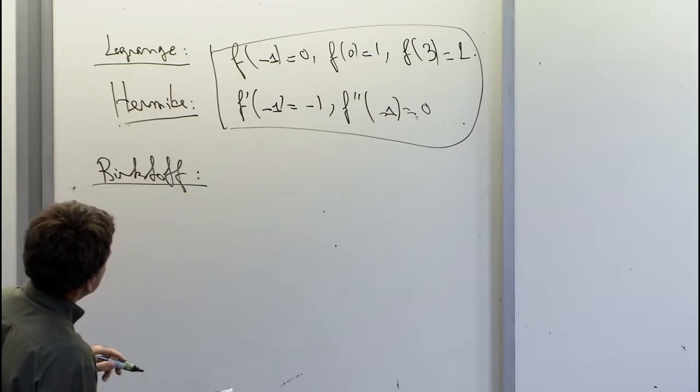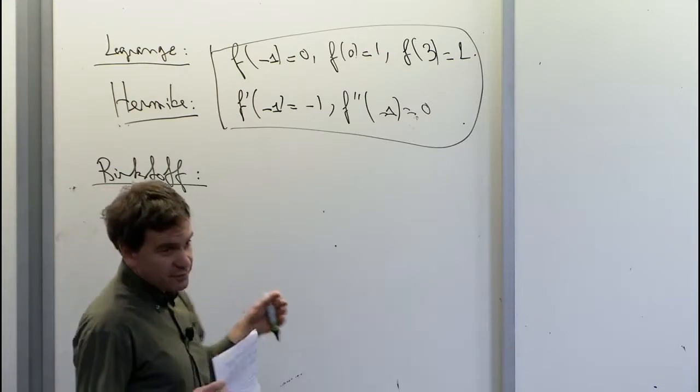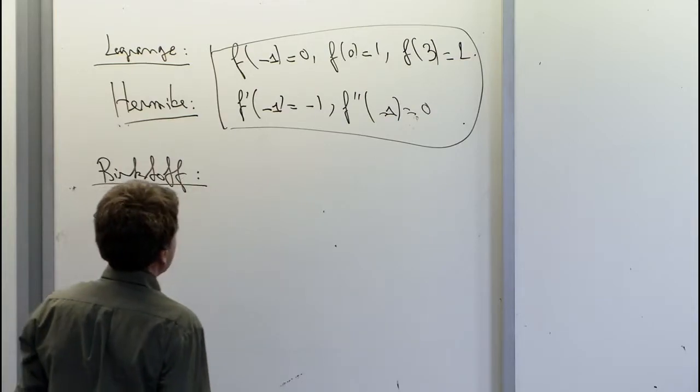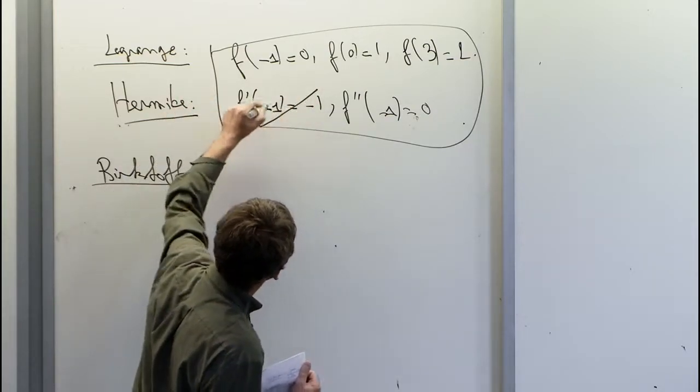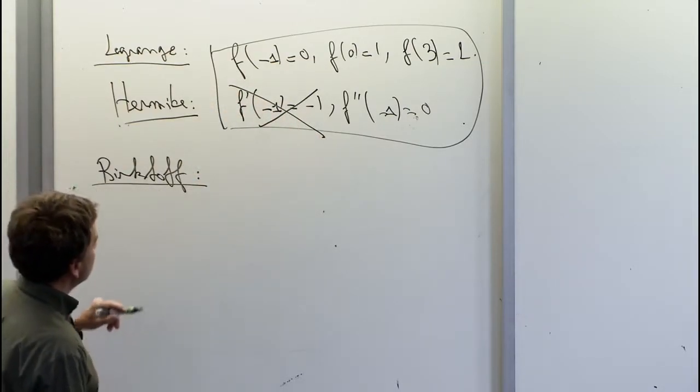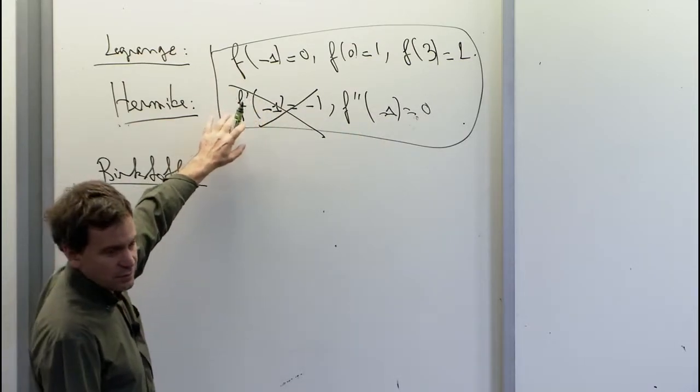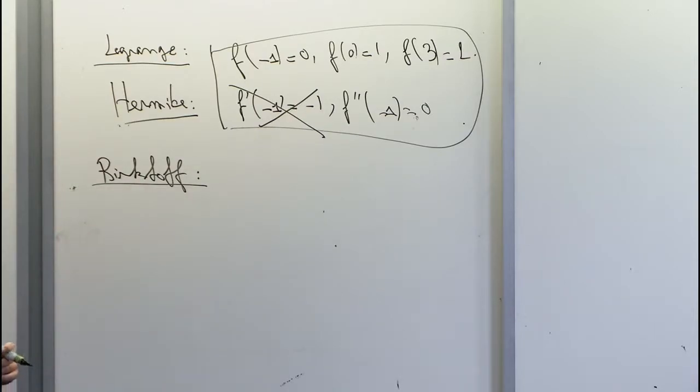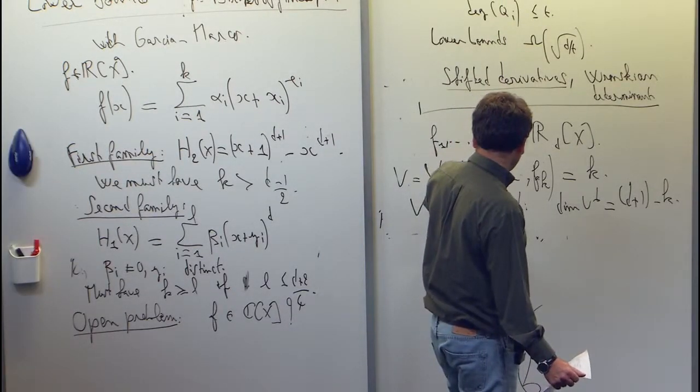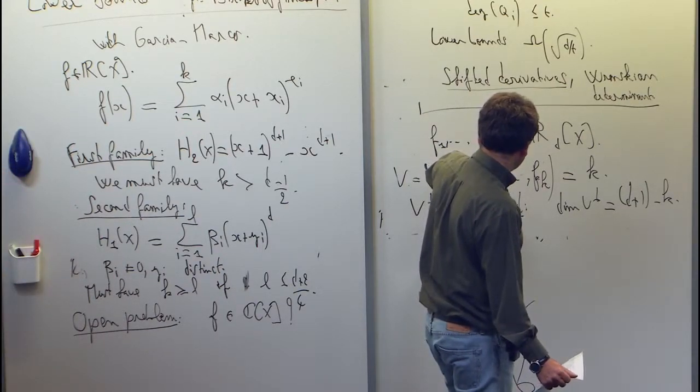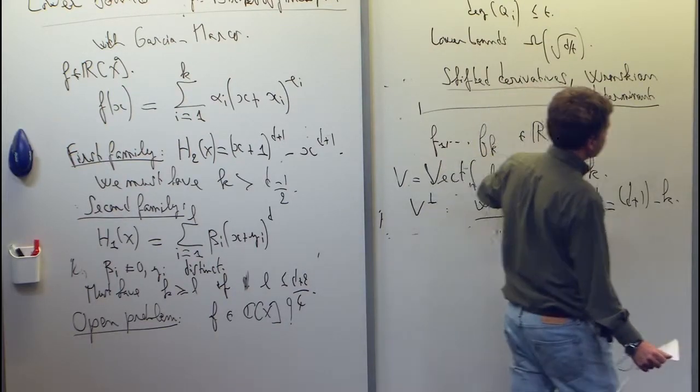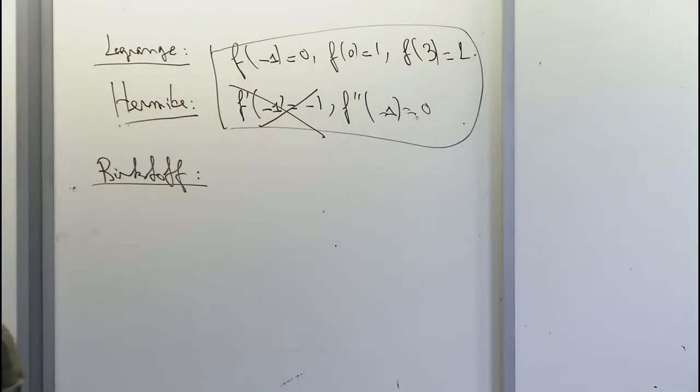And Birkhoff is even more general. In Birkhoff interpolation, you can have holes, if you want, in the sequence of derivatives that you interpolate at any point. So for instance, we could remove this constraint here. So you would ask about the value of f and its second order derivative, but there would not be any constraint on the first order derivative. So that's what Birkhoff interpolation is about. And it turns out that this problem here of finding out the dimension of a space spanned by k polynomials, you can rewrite it as a Birkhoff interpolation problem. And there's a very nice theory that helps you find out the dimension.